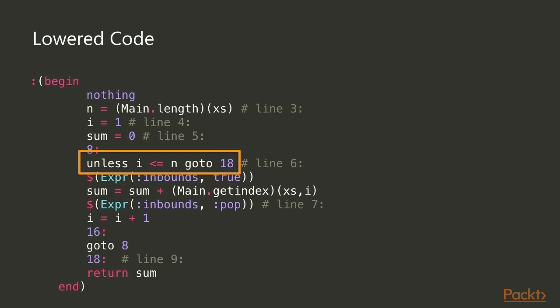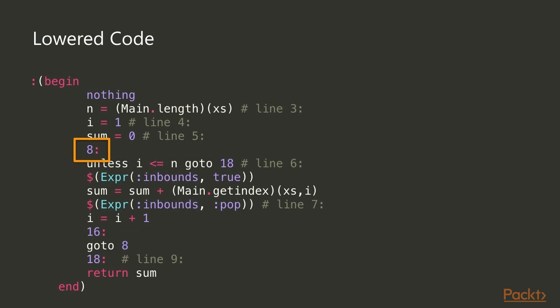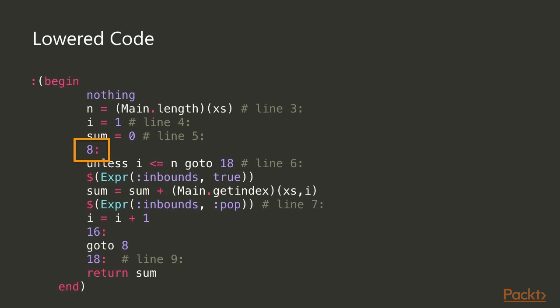The lowered code is much more primitive Julia — everything is explicit. For instance, `length` has the module prefix `Main`. There are no higher-level constructs like a while loop; instead it's essentially an if statement with a goto. We check if `i` is less than or equal to `n` to continue, otherwise we jump to label 18 for an early exit, and at the end of the loop body there's a `goto 8` to start over. Notably, there's no mention of types in the lowered code.